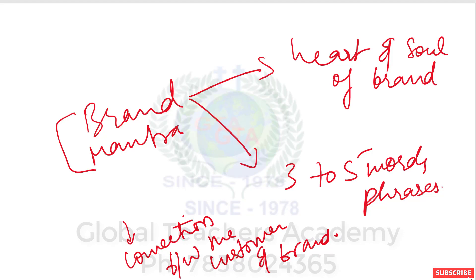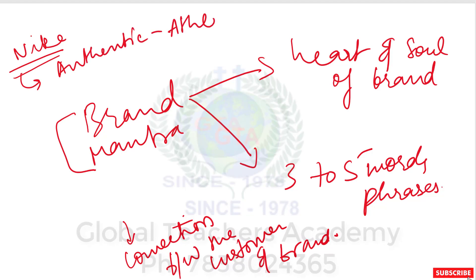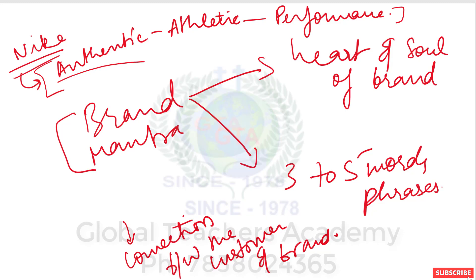For example, Nike's brand mantra is 'authentic, athletic, and performance' — short, three-to-five word phrases as discussed. Nike's tagline is 'Just Do It.' Another example is Coca-Cola — their brand mantra is 'sharing, happiness, and tasty,' and their tagline is 'Thanda Matlab Coca-Cola.' This shows that the tagline is an external manifestation of the brand, while the brand mantra is the heart and soul.